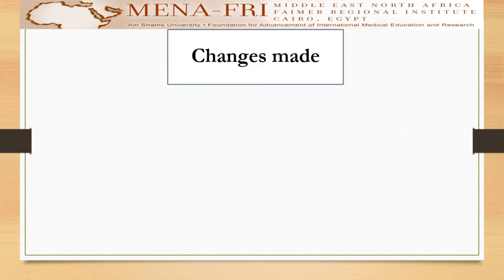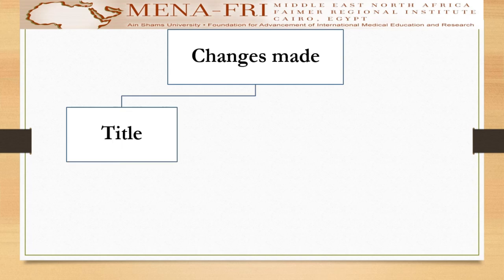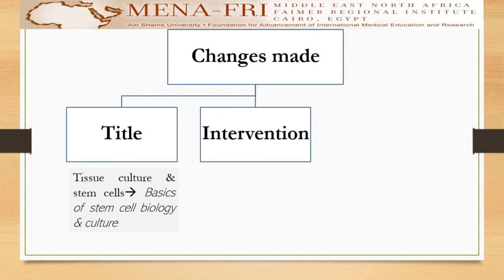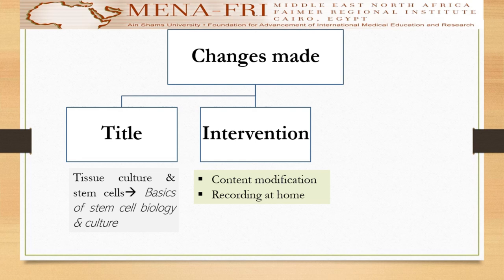Changes made to the project included changing the course title to be more relevant. It was changed from Tissue Culture and Stem Cells to Basics of Stem Cell Biology and Culture. Intervention changes included content modification and recording the lectures at home instead of the e-learning unit, as it was overwhelmed by the sudden shift to online teaching as a consequence of the COVID-19 pandemic.